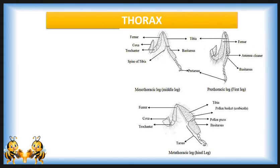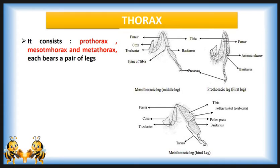The thorax of the honeybee consists of three thoracic segments called prothorax, mesothorax, and metathorax. Each segment bears a pair of legs: prothoracic leg, mesothoracic leg, and metathoracic leg. A pair of wings is also present on the meso- and metathorax. Legs and wings are the locomotory organs present in the honeybee.